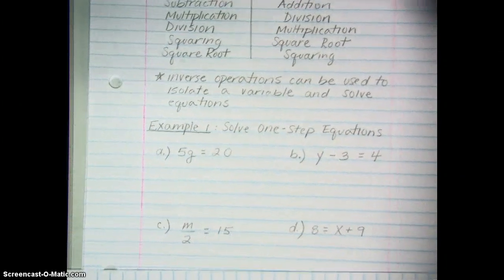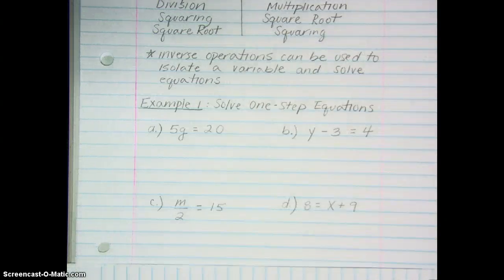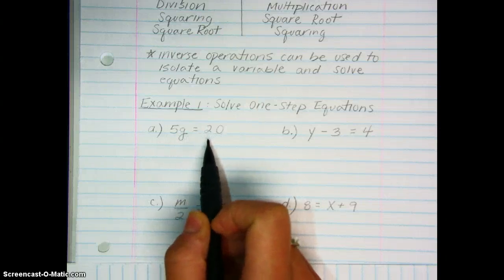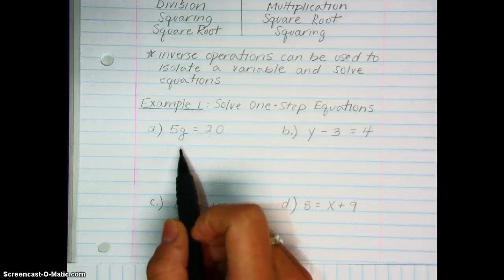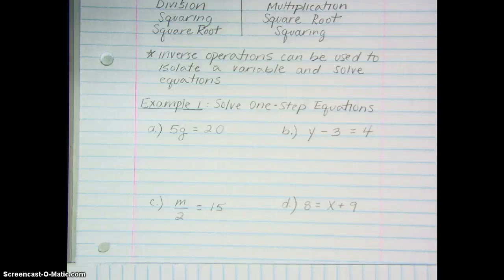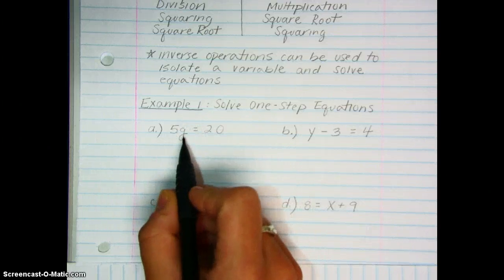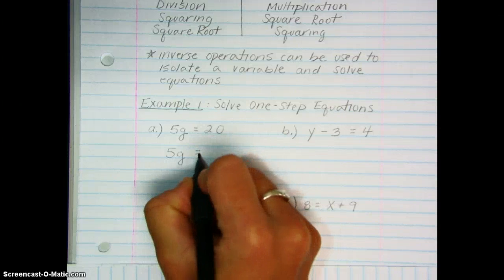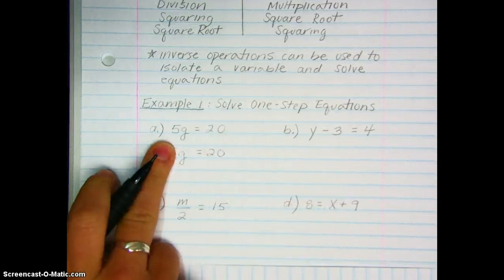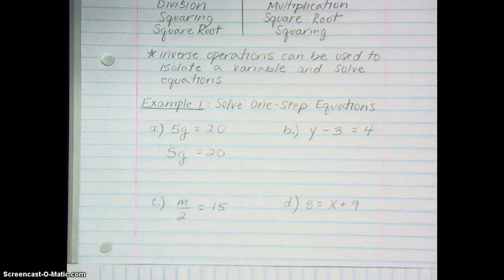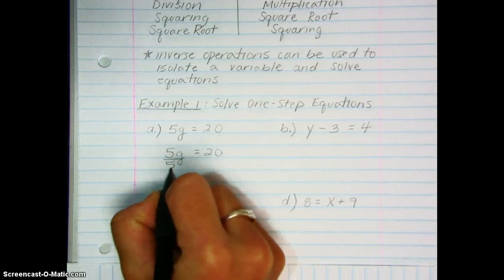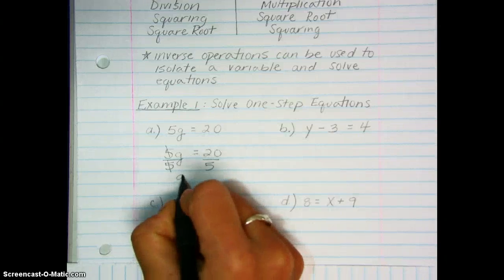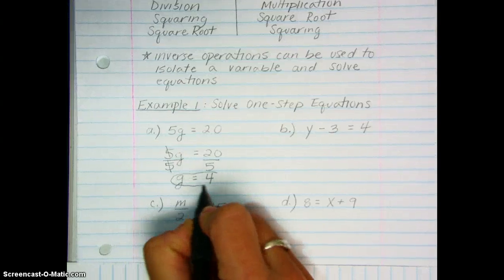Looking at some one-step equations, a lot of these you could probably solve using mental math. You might ask yourself: five times what number gives me 20? You might easily determine that g must be four. However, we can also use inverse operations. What's being done to g? It's being multiplied by five. So to undo that multiplication and isolate g, we perform the inverse operation — we divide by five. Whatever we do to one side, we always do to the other side. These cancel, leaving g equal to four.